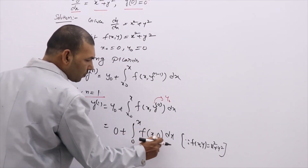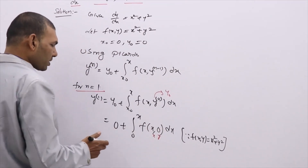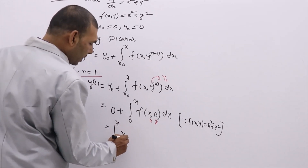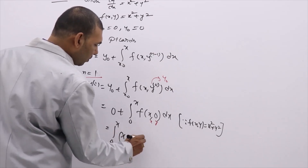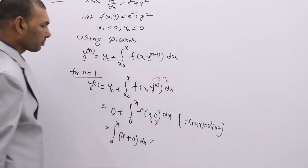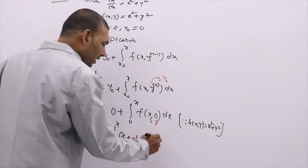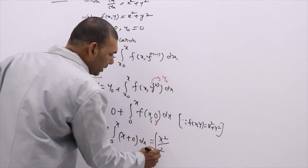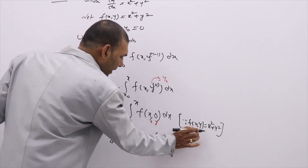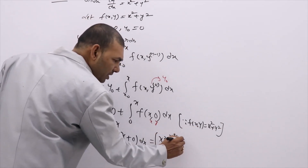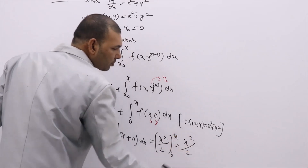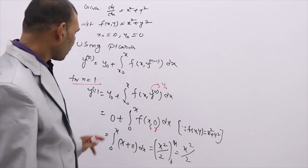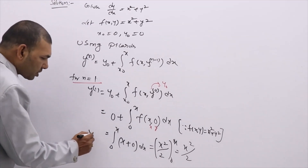So f(x, 0) equals x squared. The integral from 0 to x of x squared dx is x squared — wait, the integral of x dx is x squared by 2, limits 0 to x. Writing in the place of x, x, you get the same. The lower limit is 0, so that gives 0. Thus y₁ equals x squared by 2. This is the first approximation value.